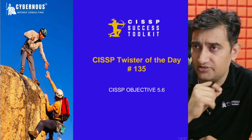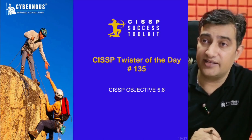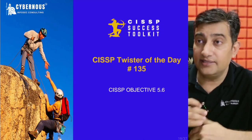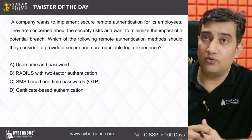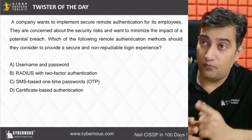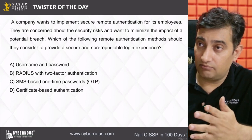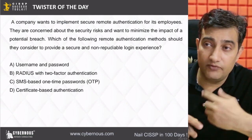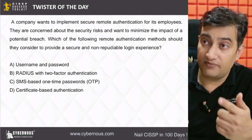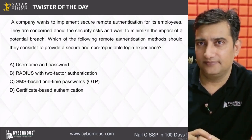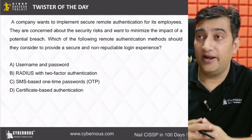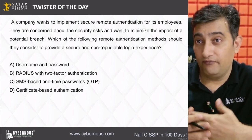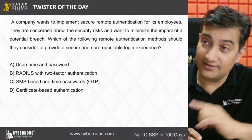This particular twister is picked from CISSP objective number 5.6, which is access control. Let's dive into this question. Feel free to pause the video for a minute — I'll give you the explanation after about 10 seconds. I hope by now you have identified your answer; if not, feel free to pause and answer it first.